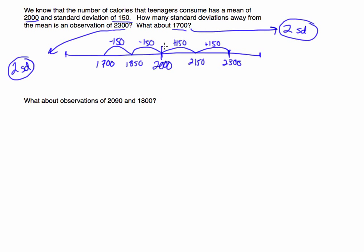But in this case, I'm 2 standard deviations to the left. I don't want to put negative 2, because standard deviations are never going to be negative. This is positive — I'm 2 standard deviations away, just to the left.